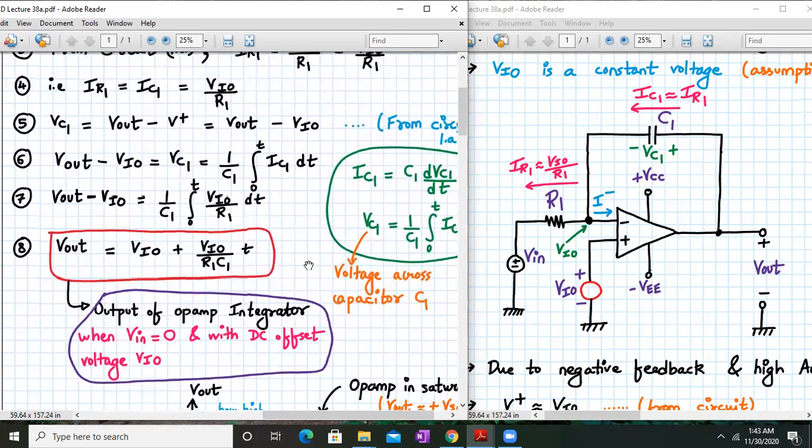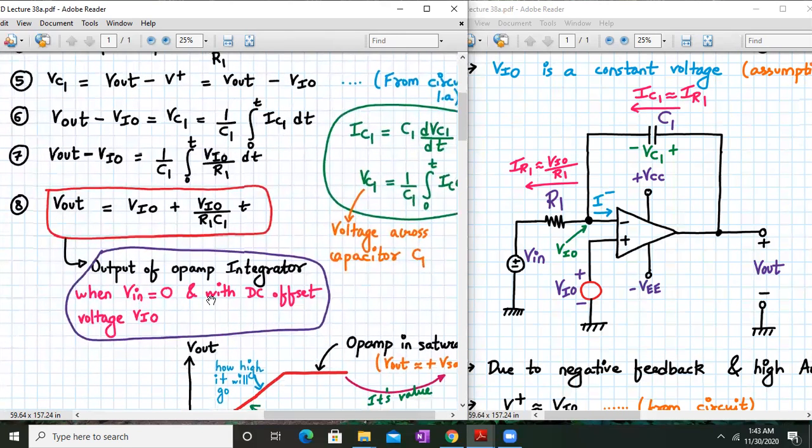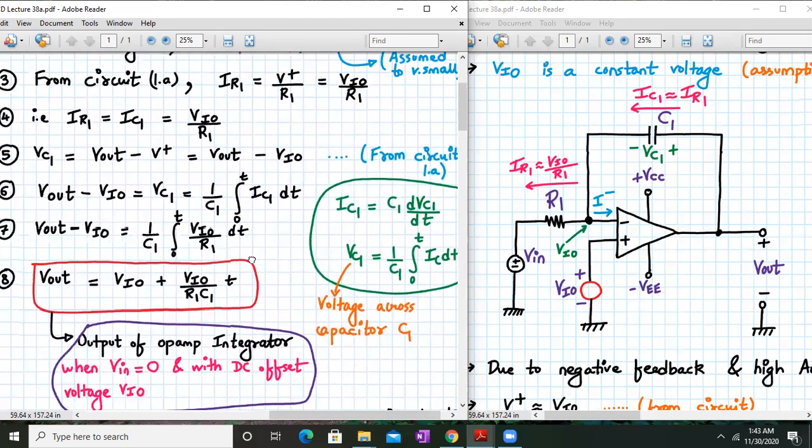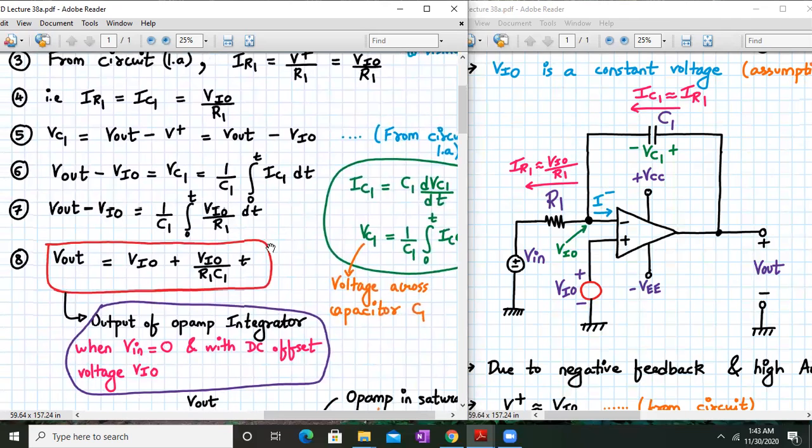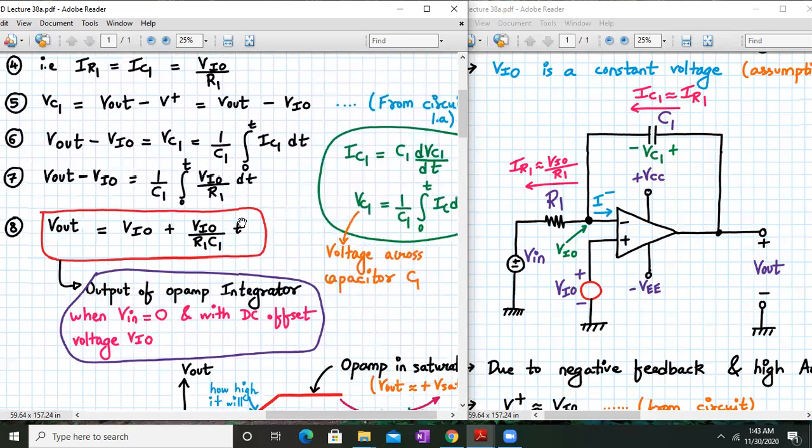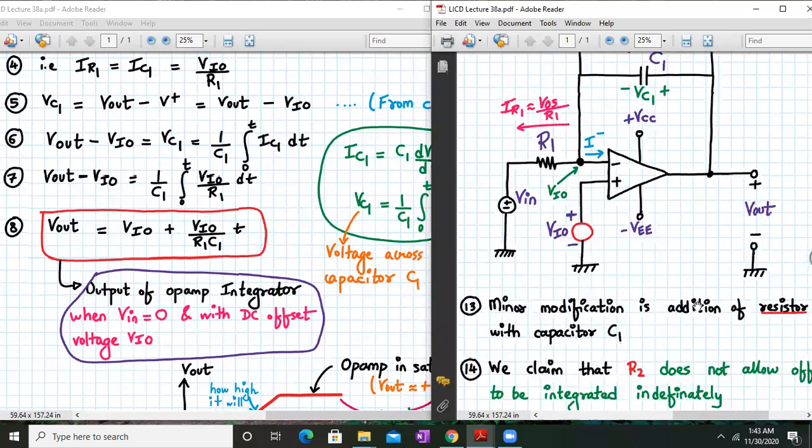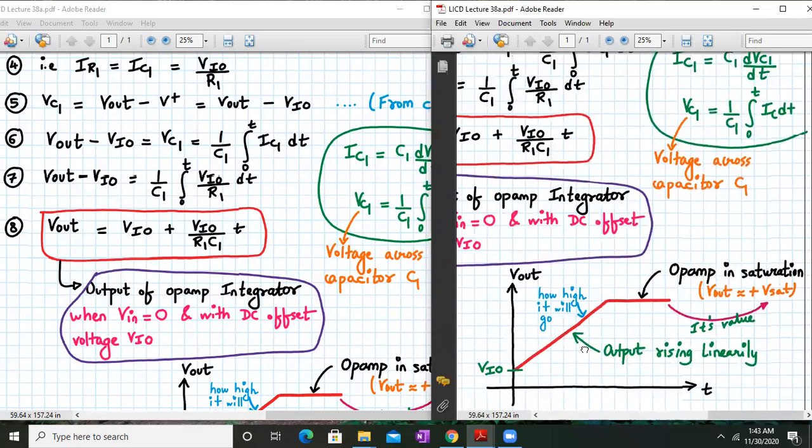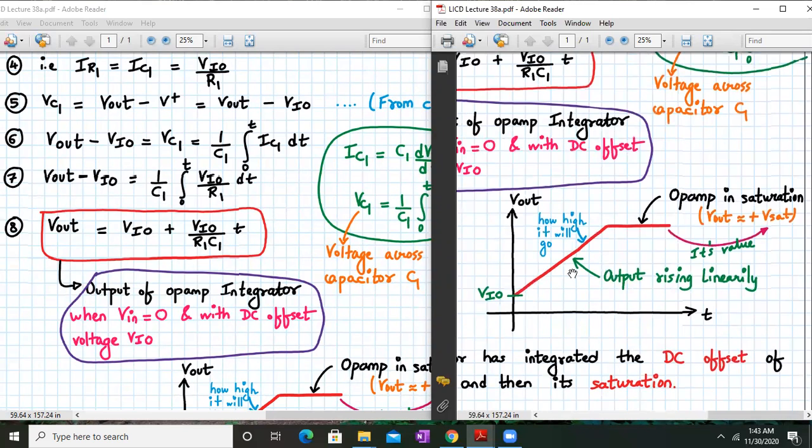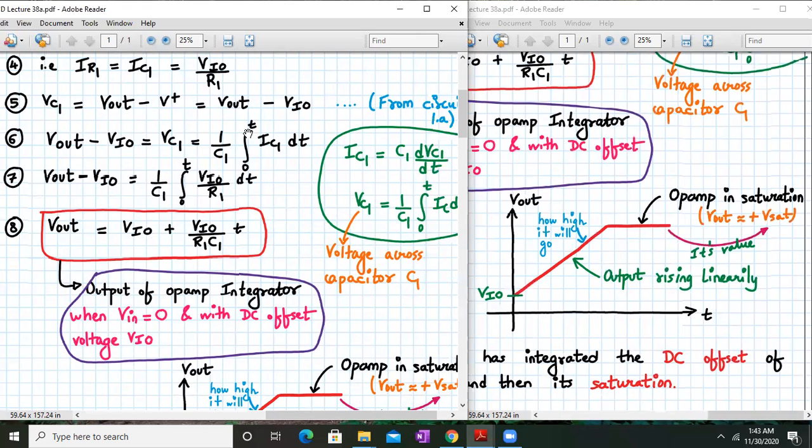So this is my output of Op-Amp integrator with VIO and with only DC offset VIO. If I want to plot a graph of Vout versus time, at time equal to 0, my output will be VIO. So I will already have a DC error. And as my time progresses, this Vout will keep on rising. If you compare this, whenever T is equal to 0, my output is VIO, and then with increasing time, Vout slightly increases.